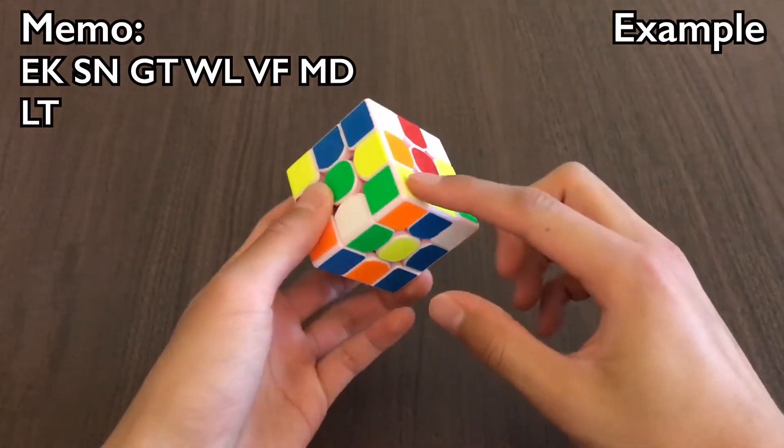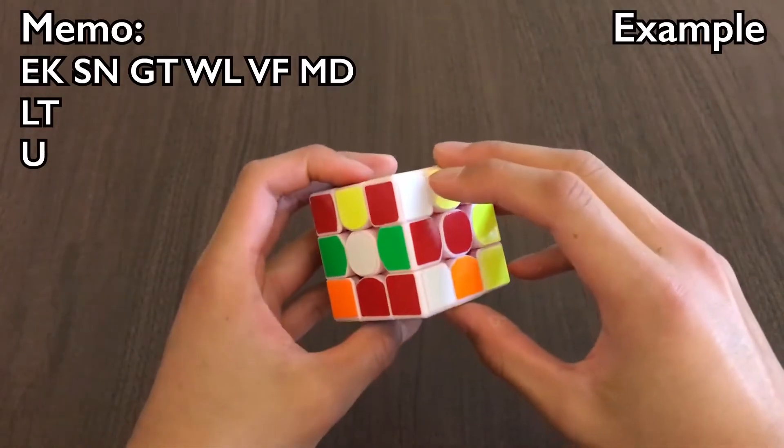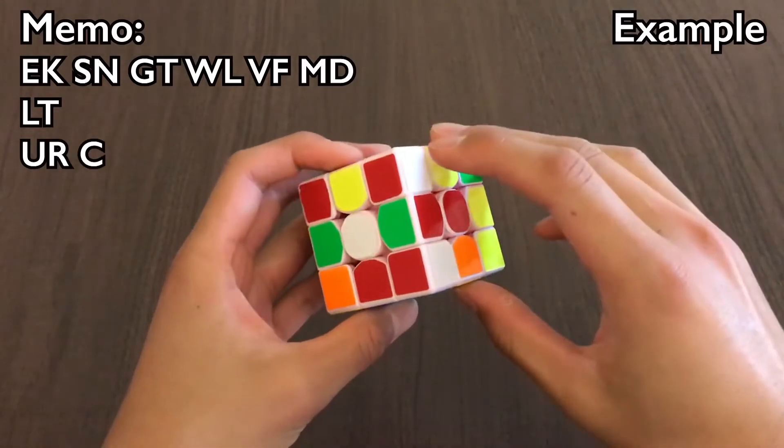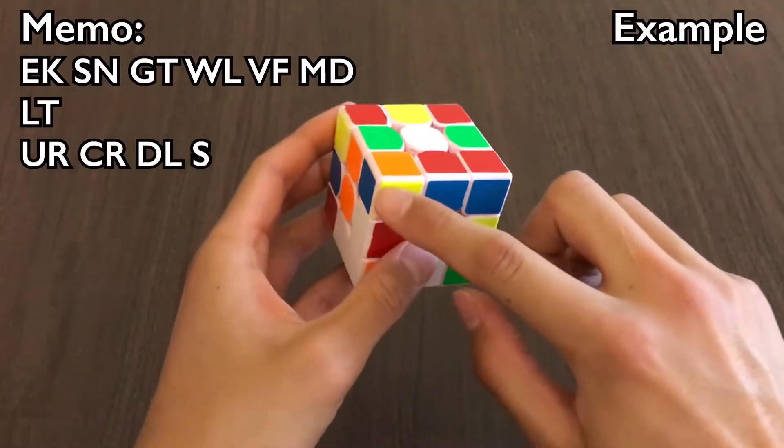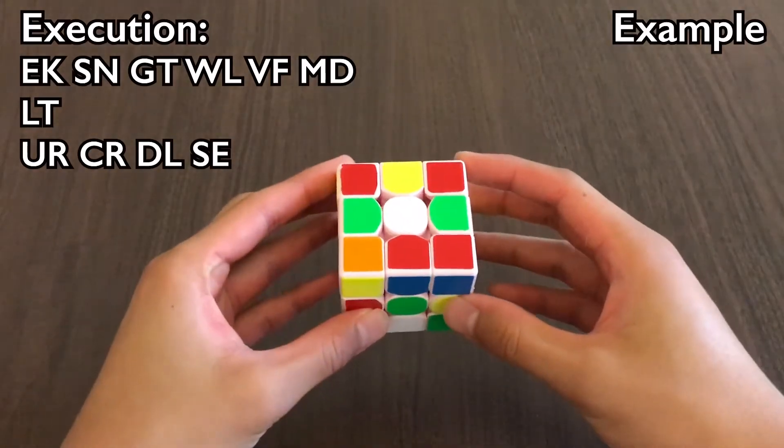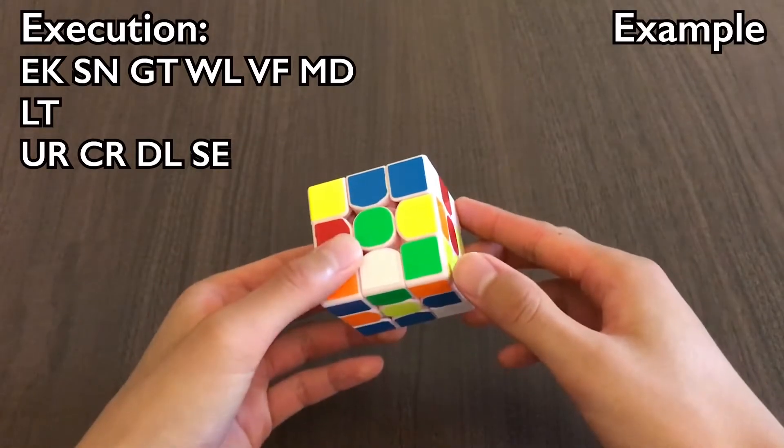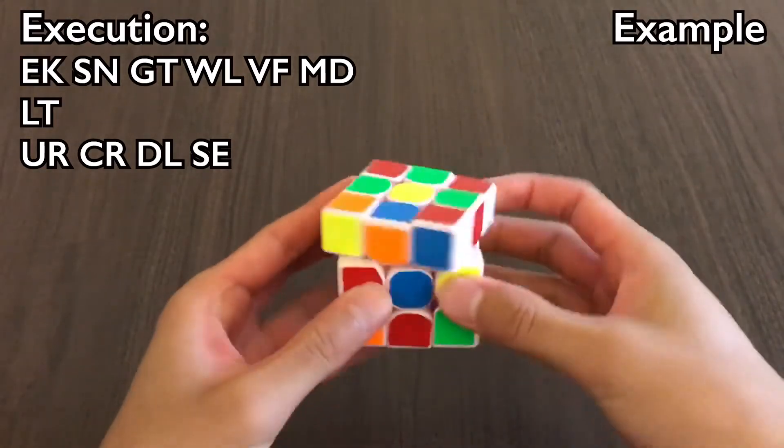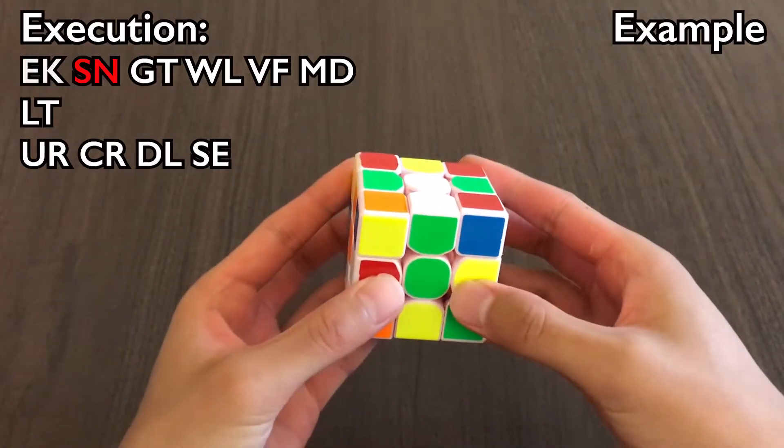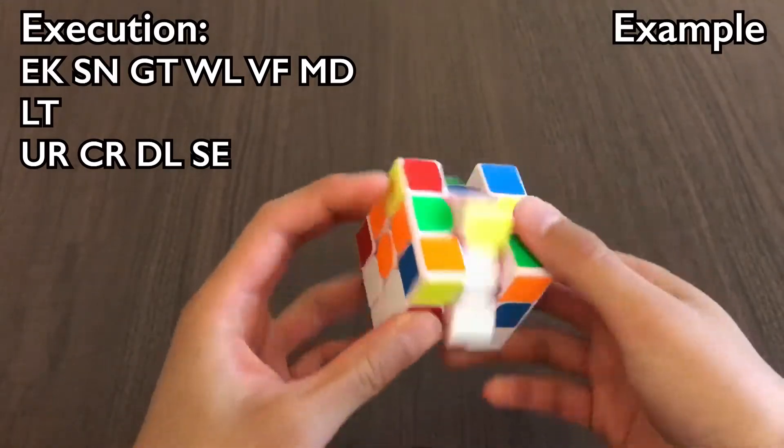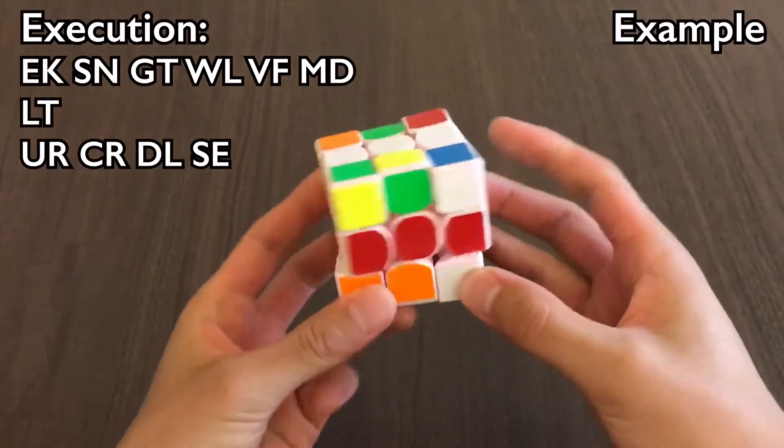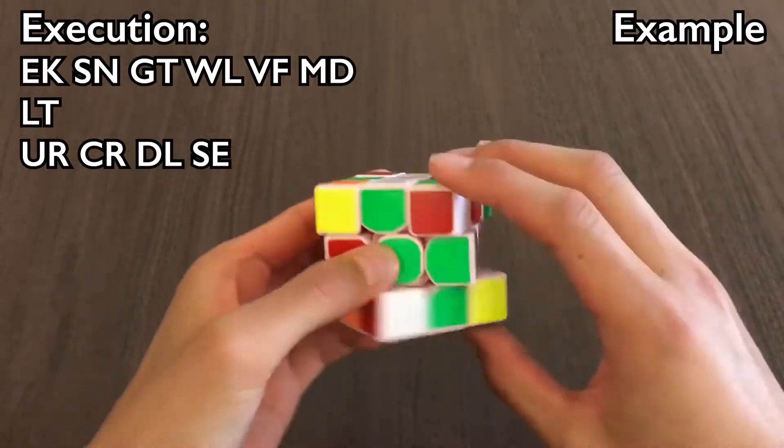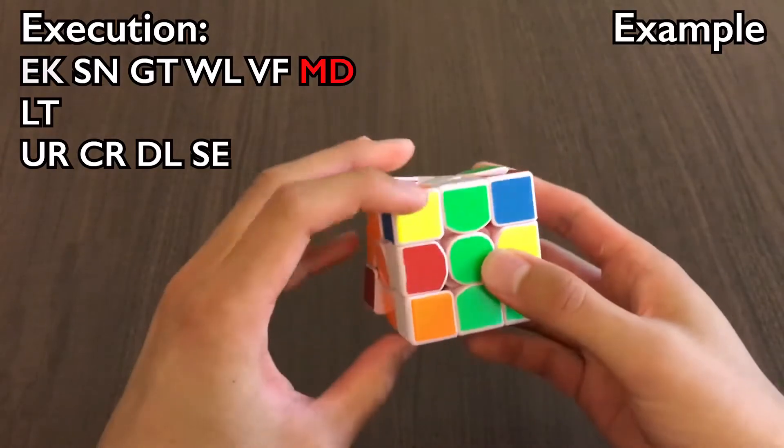Continuing on for corners, I have U, and I'm going to break to R, C, R, and then break to D, L, S, E. Now for execution, and I'm going to solve these with three styles. E, K, S, N, G, T, W, L, V, F, M, D.